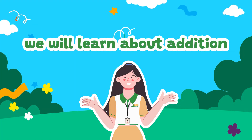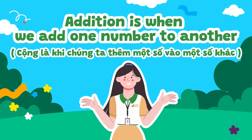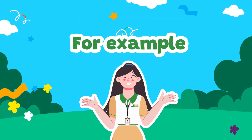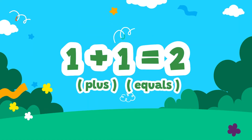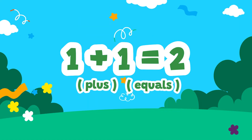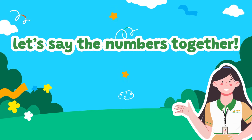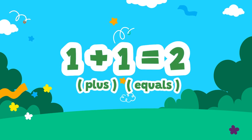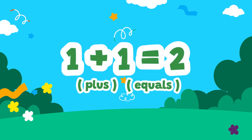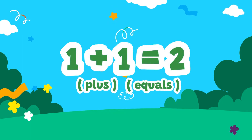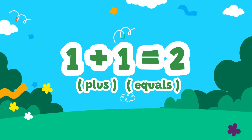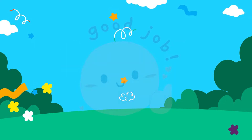First, we will learn about addition. Addition is when we add one number to another. For example, 1 plus 1 equals 2. Kids, let's say the numbers together. 1 plus 1 equals 2. Good job!